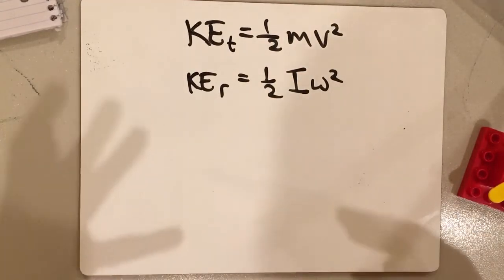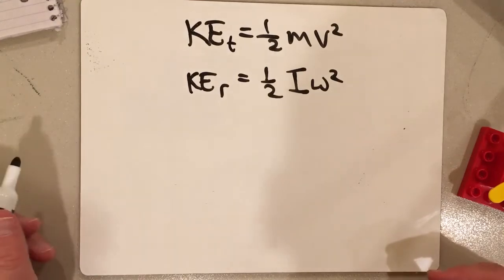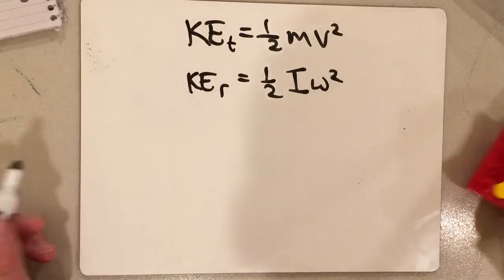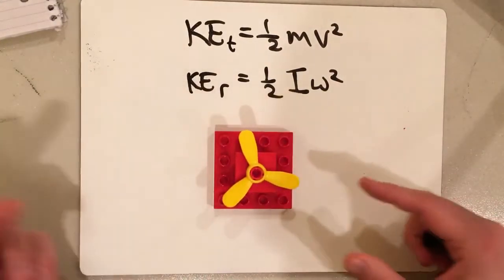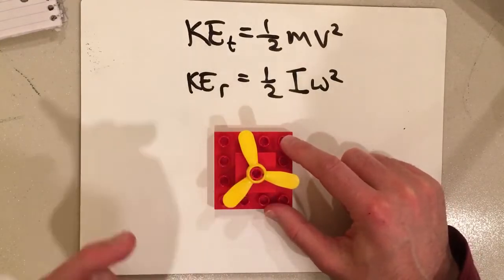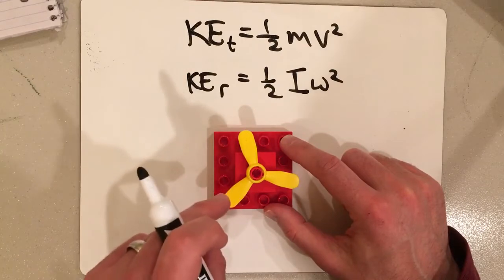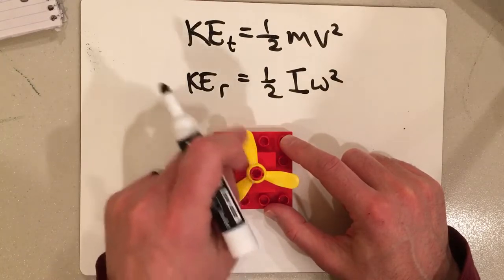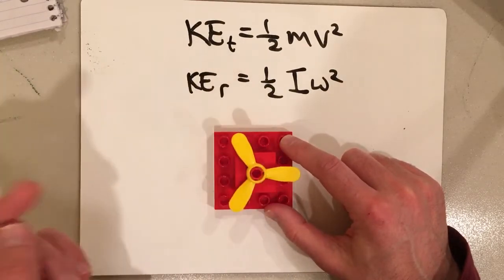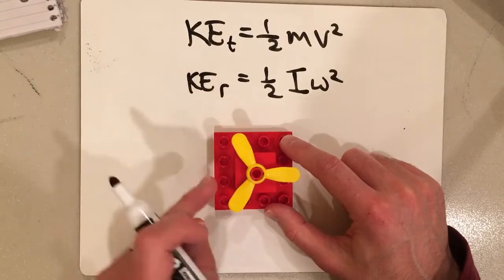To be brief about it, the moment of inertia depends on the distribution of matter about the rotational axis. So in the case of this toy, the rotational axis is right in the center. And so, what determines what the moment of inertia will be is just how this matter is distributed relative to that rotational axis.